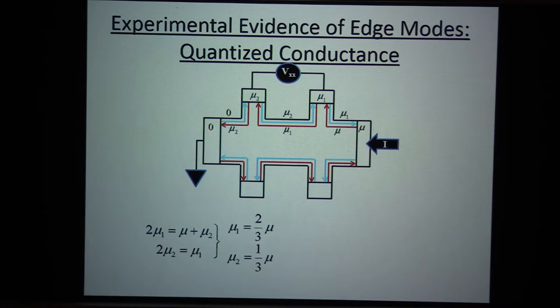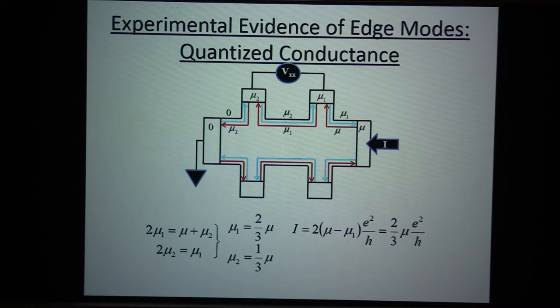Similarly, we can go through this calculation or requirement of current conservation at contact number two. In this case, we have one here, chemical potential zero. So we replace mu, which was here, with zero and we get 2 mu2 equals mu1. And it's easy to solve this for a given chemical potential mu to find that mu1 equals two-thirds mu and mu2 equals one-third mu. Essentially, the way voltage drops in this device in this particular configuration is one-third, one-third, and another one-third.